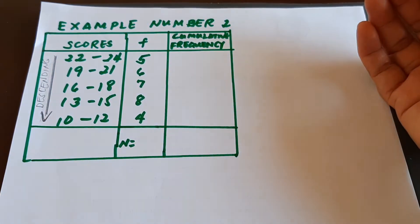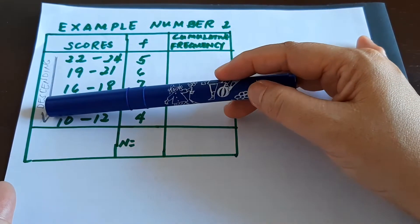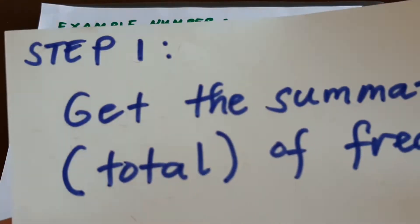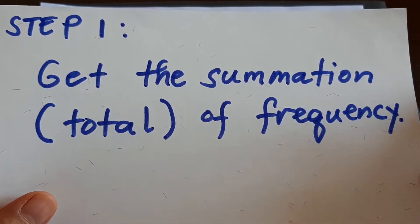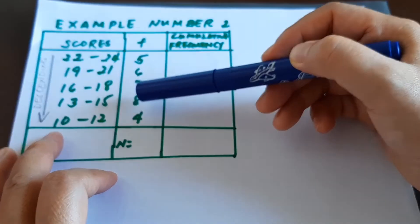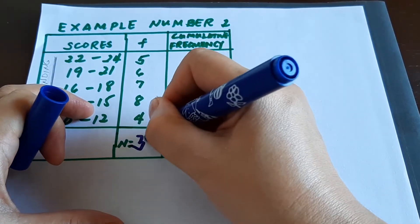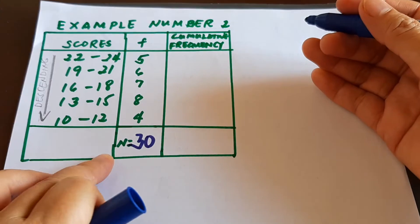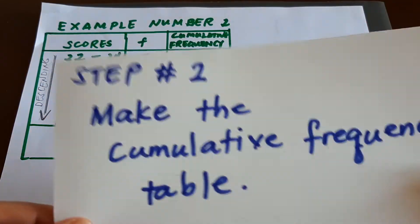Our procedure will be almost similar to example one, but we have to be very careful because the data is arranged in descending order. Step one — same procedure: get the total of the frequency. In this example, 5 plus 6 plus 7 plus 8 plus 4 gives us 30, so our n is 30.